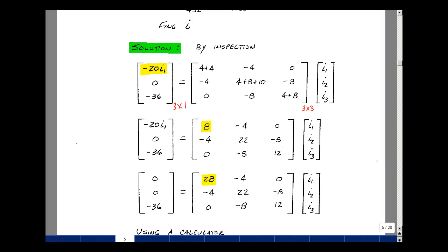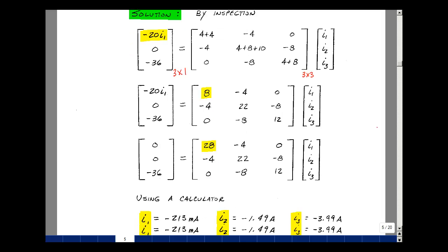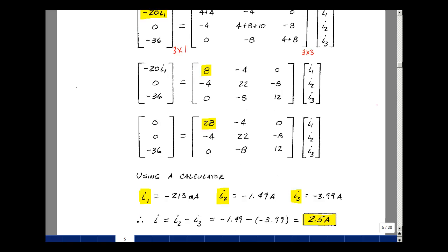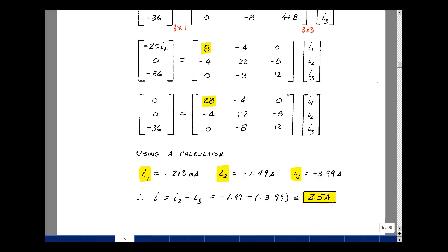So I have three equations and three unknowns now. I can use my calculator to find the values of I1, I2, and I3, or I could do Kramer's rule. We have some zeros in our matrix, so it wouldn't be too hard. And I found that I1 was minus 213 milliamps, I2 was minus 1.49 amps, and I3 was 3.99 amps.